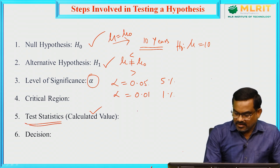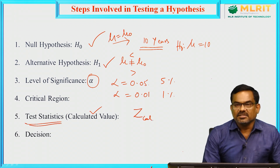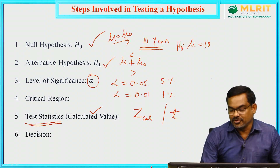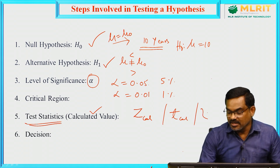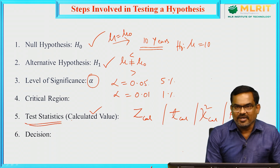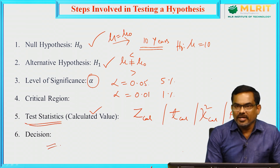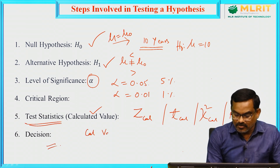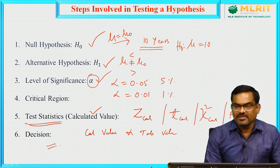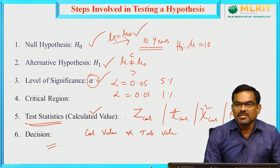For example, in means problems it follows a standard normal distribution, so we calculate the z calculated value. In other problems, depending on the given data, we may use the t distribution and find the t calculated value. Similarly, chi-square calculated or F calculated. We use a standard formula in step 5 and compute the calculated value. In the last step — the decision — we compare the calculated value with the tabular value. We find the tabular value using the level of significance, compare it with the calculated value, and take the decision whether to accept or reject the null hypothesis.